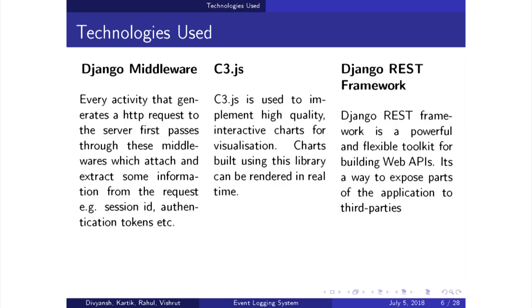Django middleware basically acts like a hook in a Django app. We are capturing events using our customized Django middleware. C3JS is used for plotting graphs and visualization. The Django REST framework is used for building the API which we have built.